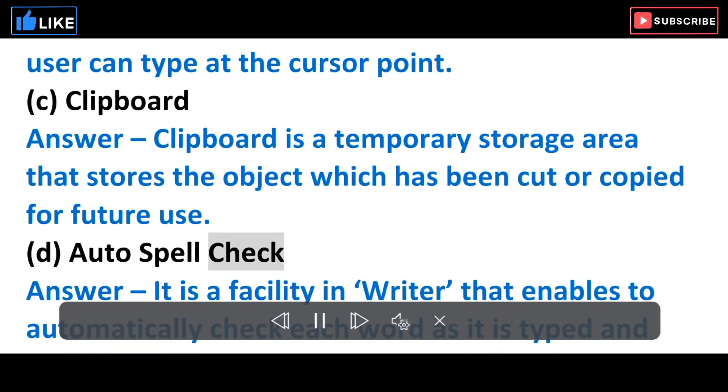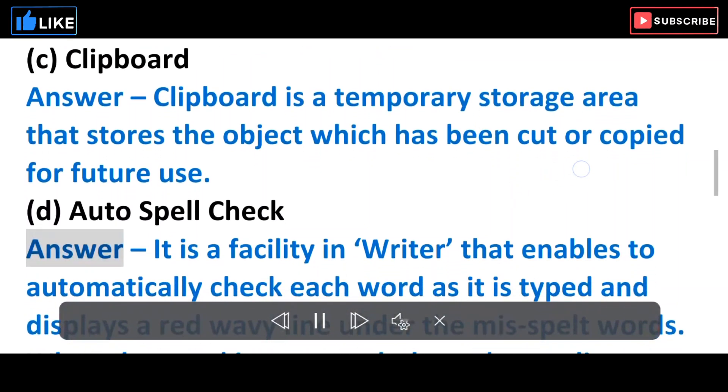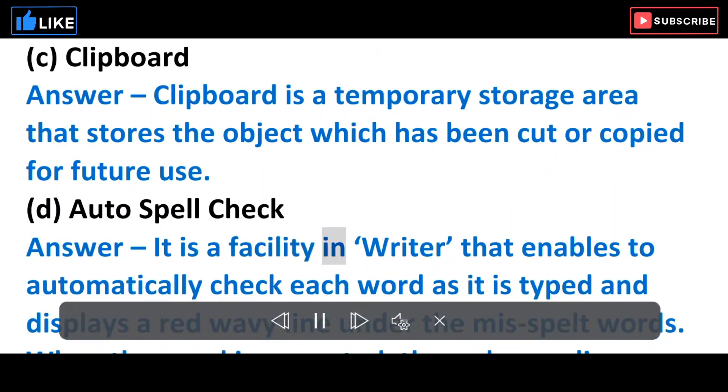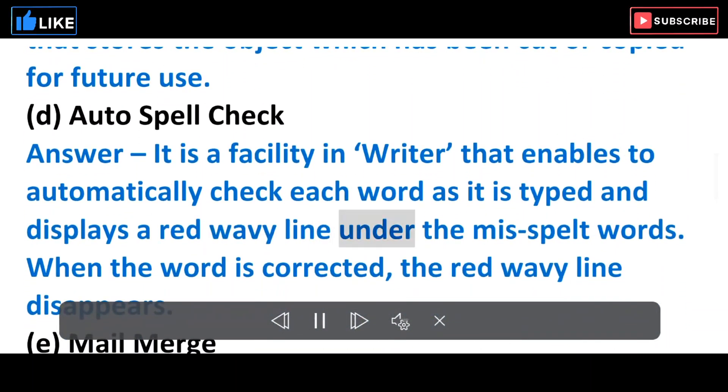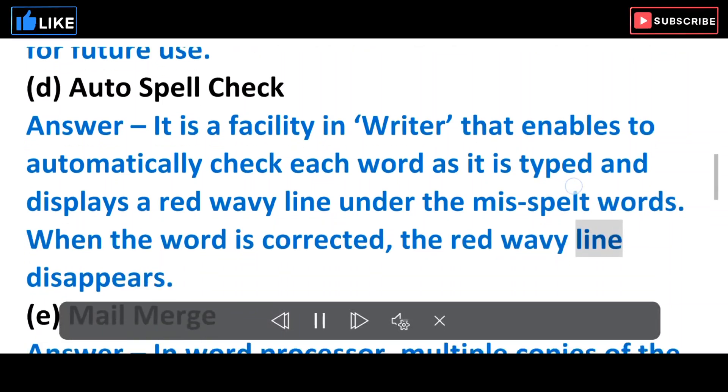D. Auto-spell check. Answer: It is a facility in Writer that enables to automatically check each word as it is typed and displays a red wavy line under the misspelt words. When the word is corrected, the red wavy line disappears.